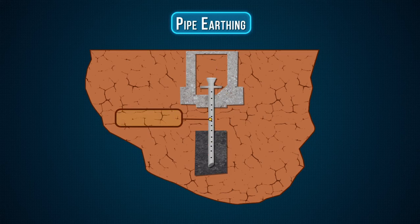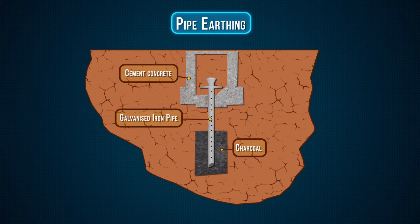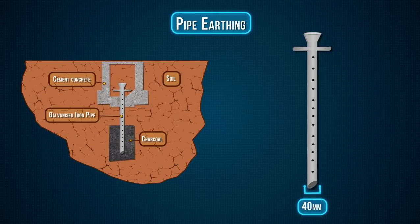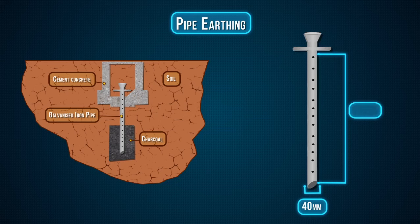Pipe earthing. Look at this design for details. A galvanized steel and perforated pipe of specified length and diameter is placed vertically in wet soil. It is the most common system of earthing. The size of pipe to use depends on the magnitude of current and type of soil. The dimension of the pipe is usually 40 mm in diameter and 2.75 m in length for ordinary soil, or greater for dry and rocky soil. The moisture of the soil will determine the length of the pipe to be buried, but usually it should be 4.75 m.